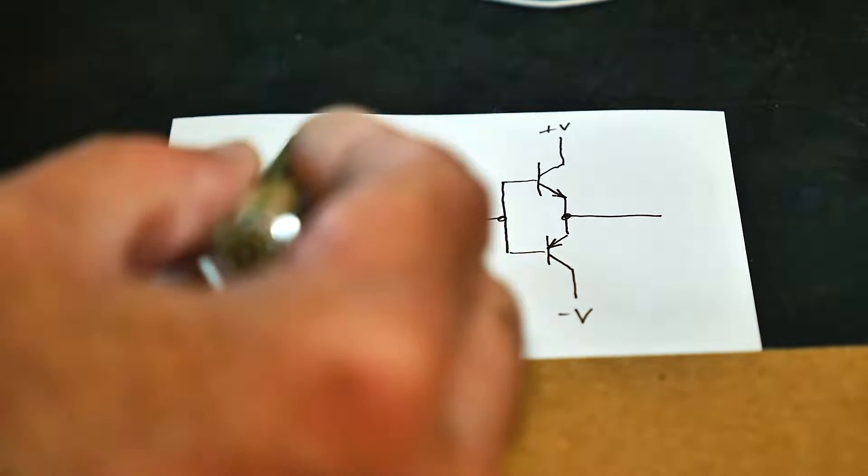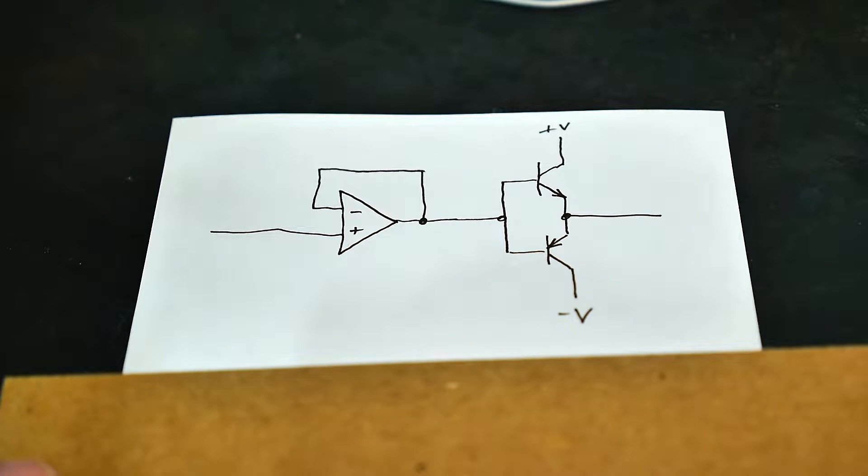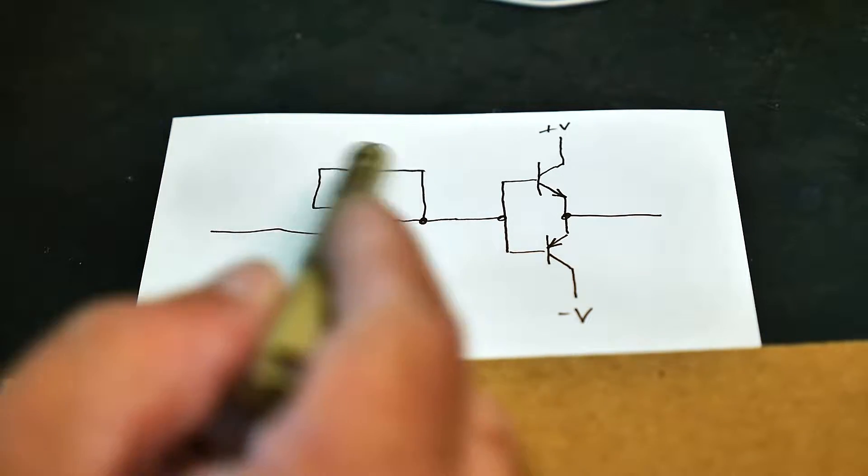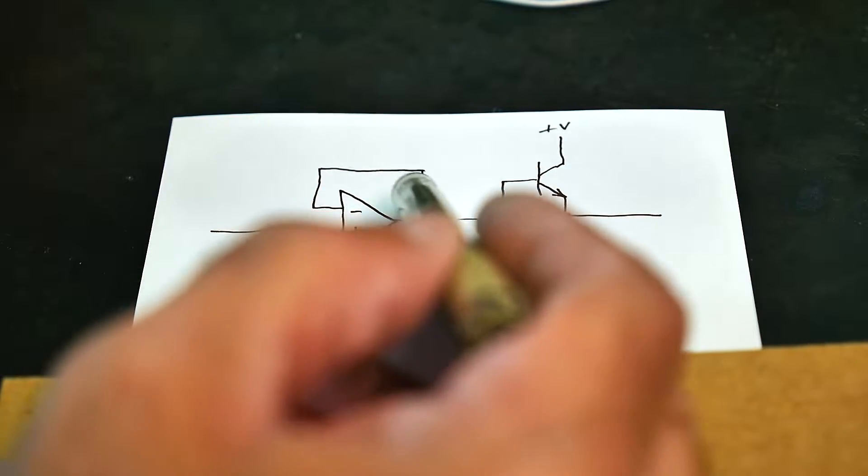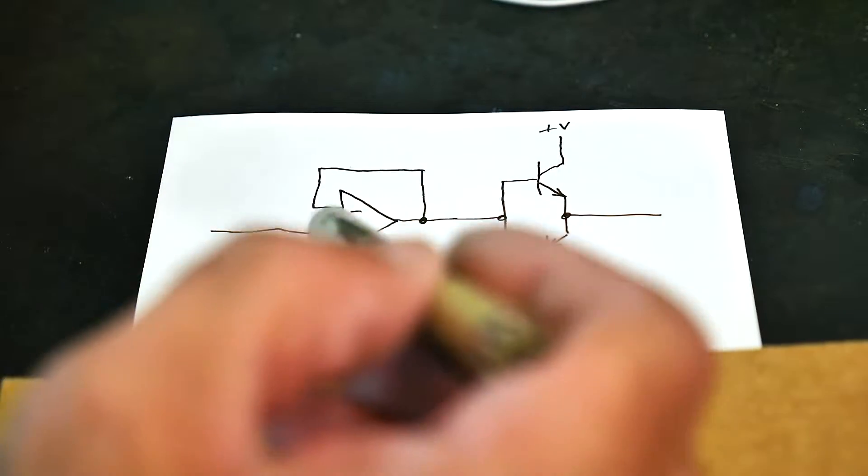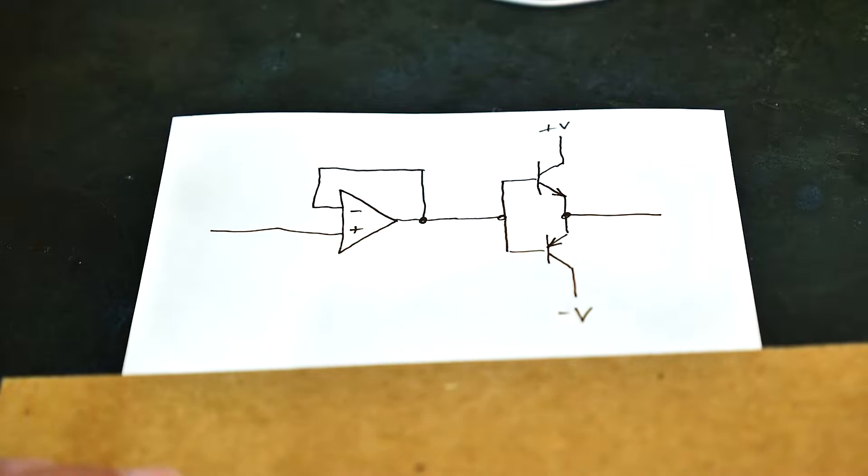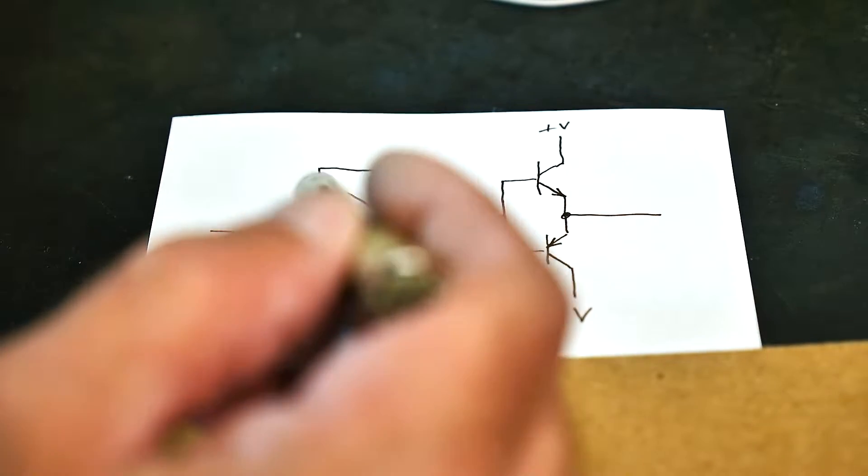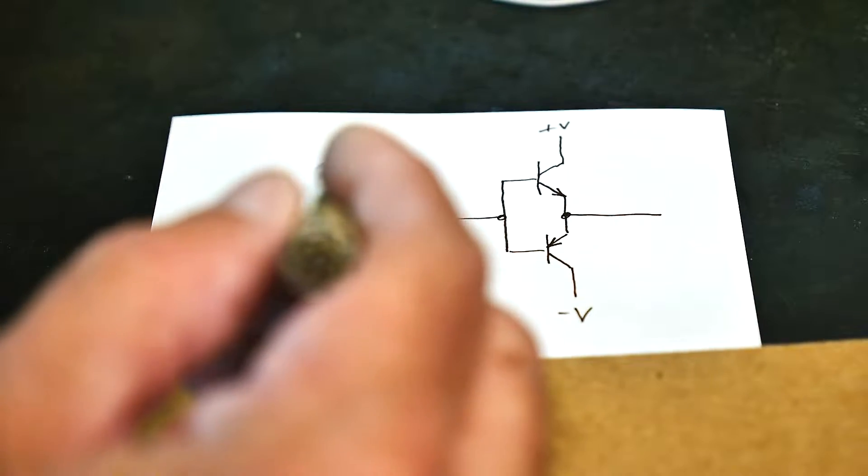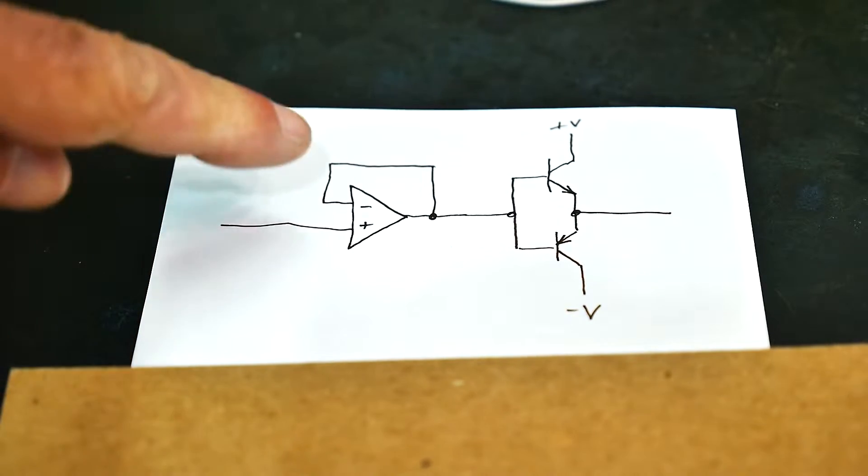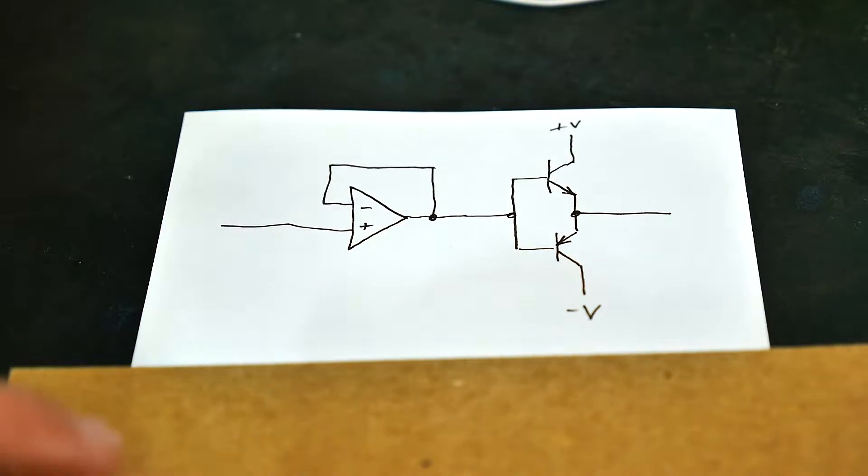So I wanted to expand on feedback and what you can do with feedback. This is a simple voltage follower with feedback used to have a very high impedance input and a low impedance output. This feedback makes sure that whatever is on the input is on the output because of the differential amplification of the op amp.